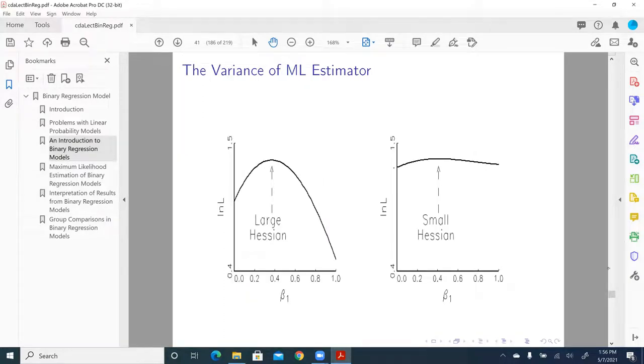So like here, if the log likelihood function is like that, and here's beta, and you're somewhere here, let's say you're here. You go either way. It'll be pretty hard for you to find really where is the top of the mountain, as opposed to this one. It'll be much clearer. If you're here, you can go this way, you can go that way.